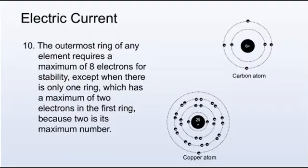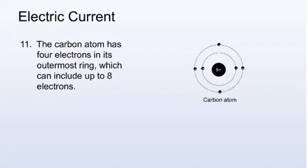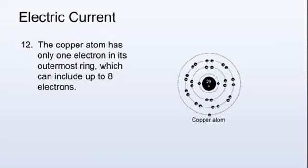The outermost ring of any element requires a maximum of eight electrons for stability, except when there is only one ring, which has a maximum of two electrons in the first ring because two is its maximum number. The carbon atom has four electrons in its outermost ring, which can include up to eight electrons. The copper atom has only one electron in its outermost ring, which can include up to eight electrons.